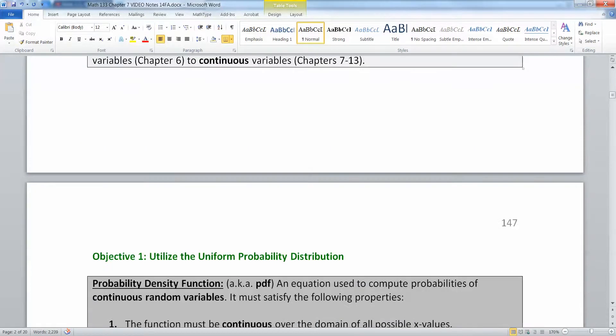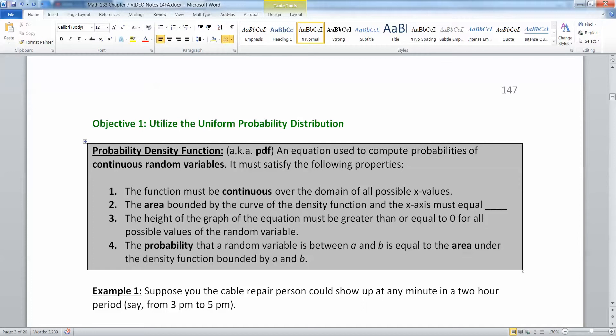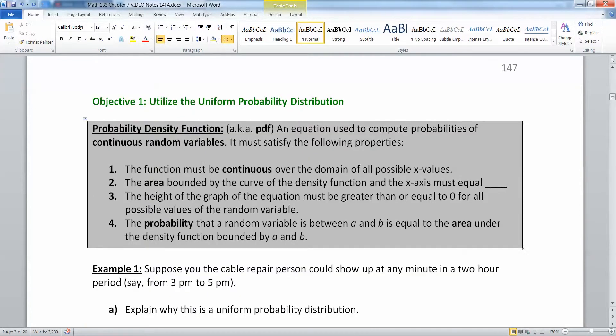Now let's move into our first continuous curve, which is the uniform probability distribution. The probability density function is an equation used to compute probabilities of continuous random variables. It has to satisfy the following properties: the function must be continuous, the area under the whole curve must equal 1, the height of the graph must be greater than or equal to 0 for all values. The probability that a random variable is between A and B equals the area under the density function bounded by A and B. That sounds really complicated, but it's actually pretty much what you were already doing with discrete probability histograms, with a couple interesting exceptions, which we'll talk about.